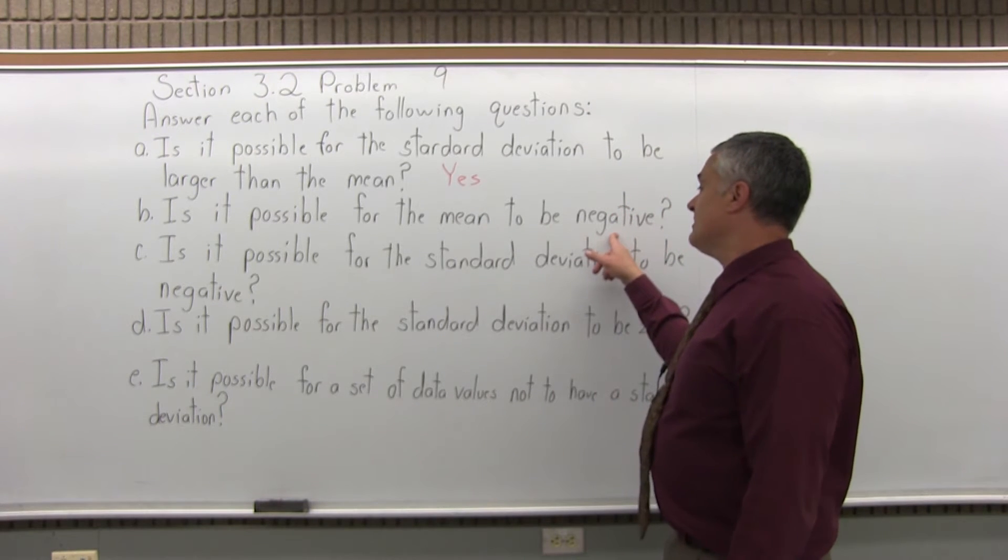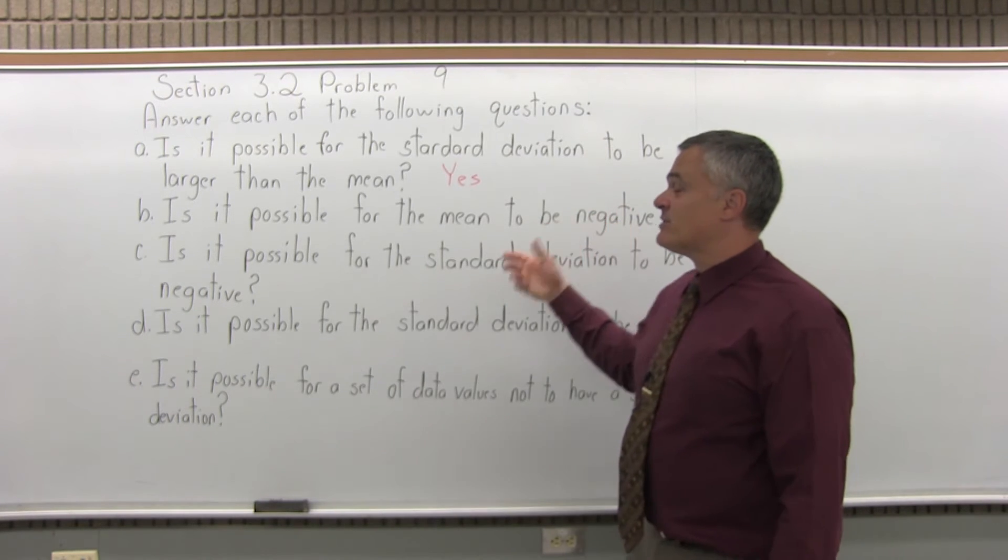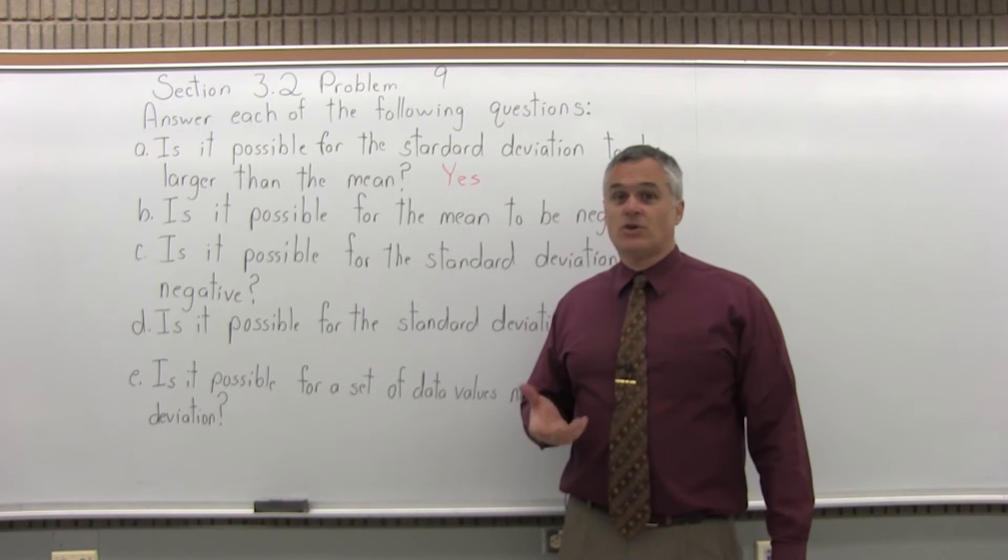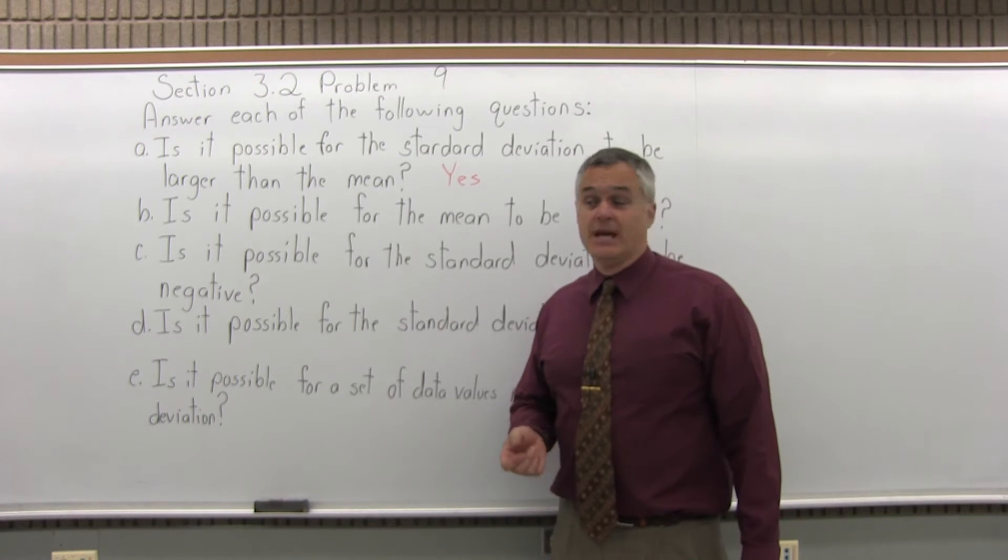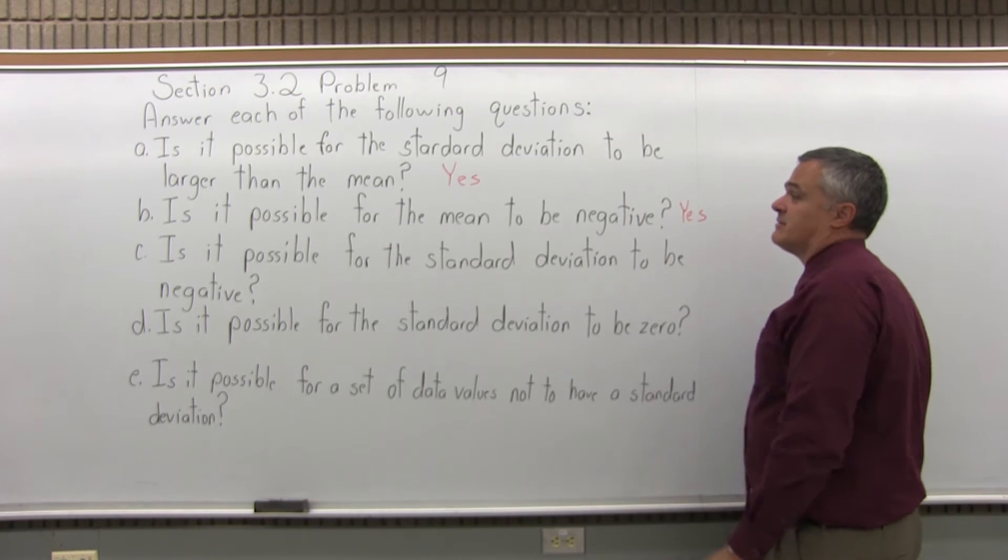Is it possible for the mean to be negative? Absolutely. Like I said, what's the average temperature in Minnesota in January? It could certainly be negative. So yes, the mean can be negative. The average value for things can be negative.